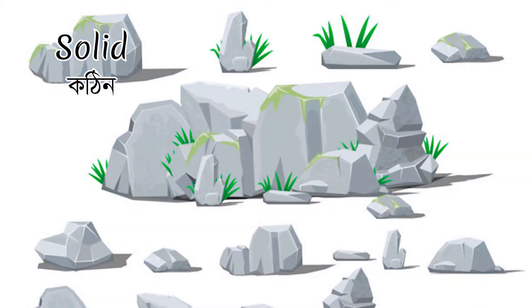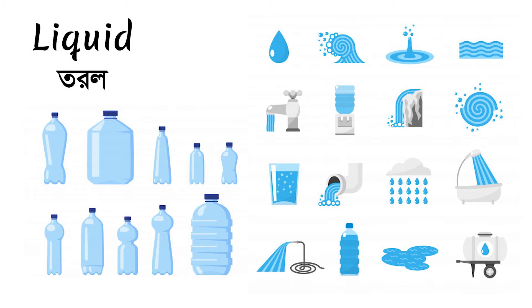Difference one: A solid has a definite shape — solid means it keeps its shape. A liquid does not have a definite shape — liquid takes the shape of its container. Difference two: If you drop a solid, it stays. However, a liquid will flow and spread.